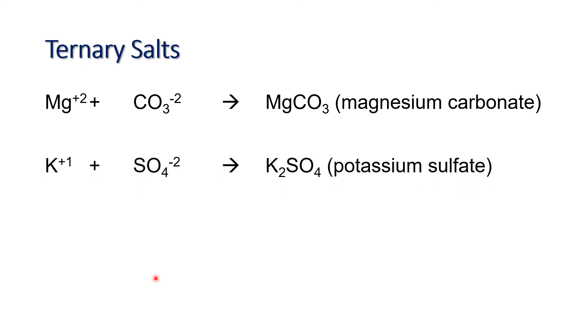For ternary salts, we said that ternary salts are formed through the combination of alkali metal and a polyatomic anion. Let's say we have magnesium which has a charge of +2, which will be combined with carbonate, which has a charge of -2, we will form MgCO3 or that is magnesium carbonate. For potassium that has a charge of +1, it will combine with sulfate with a charge of -2, we will have K2SO4. The numerical value of the charge of sulfate will become the subscript of the metal, so that becomes K2. So we have K2SO4 or potassium sulfate.